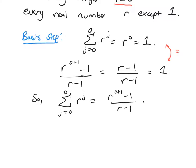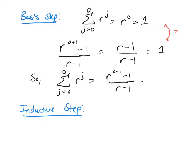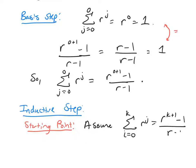So now we're going to do the inductive step. We're going to identify what's our starting point. Our starting point, we're going to assume that the formula is true for k. Assume the sum from j equals 0 to k of r to the j equals r to the k plus 1 minus 1 over r minus 1.